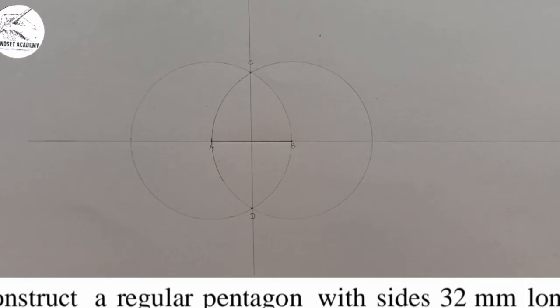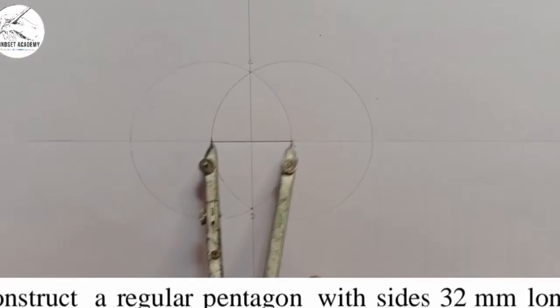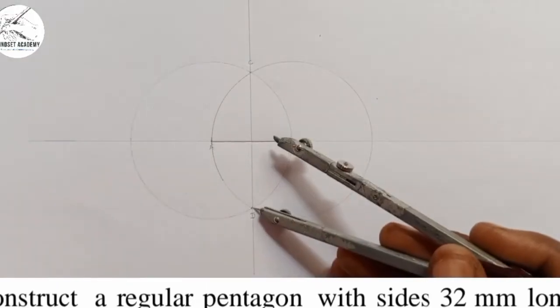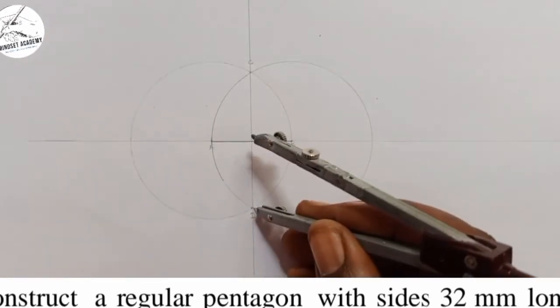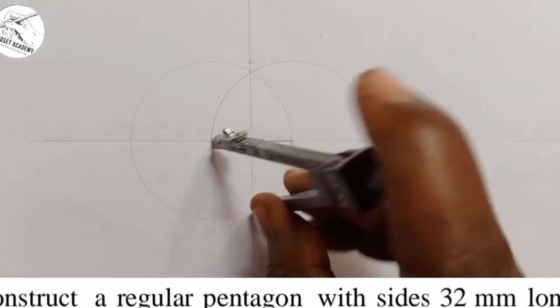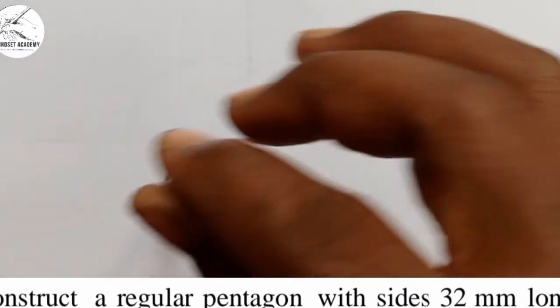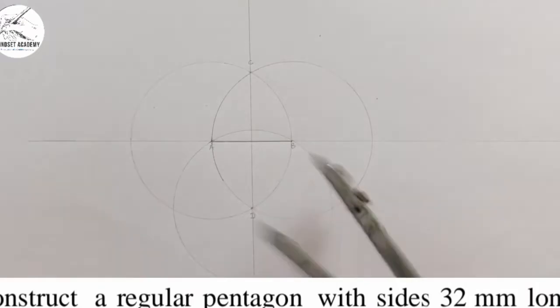Now, from that point, with the same radius, which is AB. From that point D, this way, I am going to draw another circle.